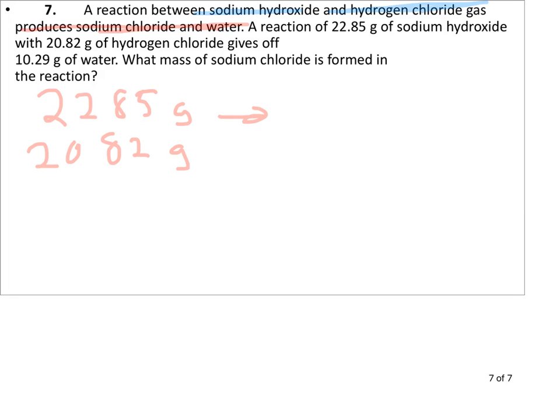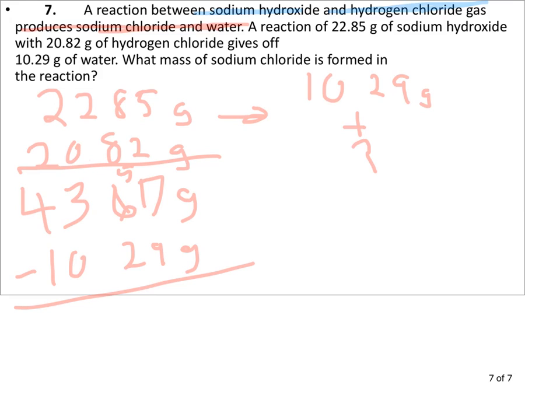We're giving off 10.29 grams and something else. The sodium chloride is what I'm going to do. So you just have to arrange these. What did you start with, what you ended up with? We know everything we started with, so I'll just add those up. And we've got 43.67 grams, and we ended up with 10.29 grams. I'm going to subtract that off. And we got 33.38 grams of the sodium chloride, and we'll use the symbol for it, NaCl.